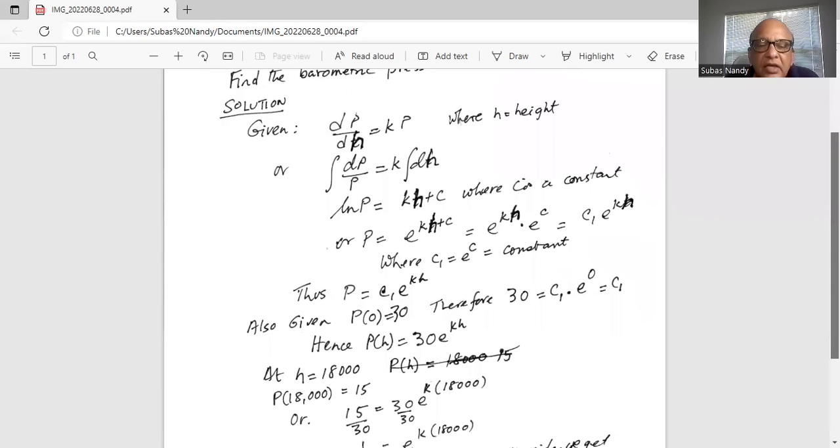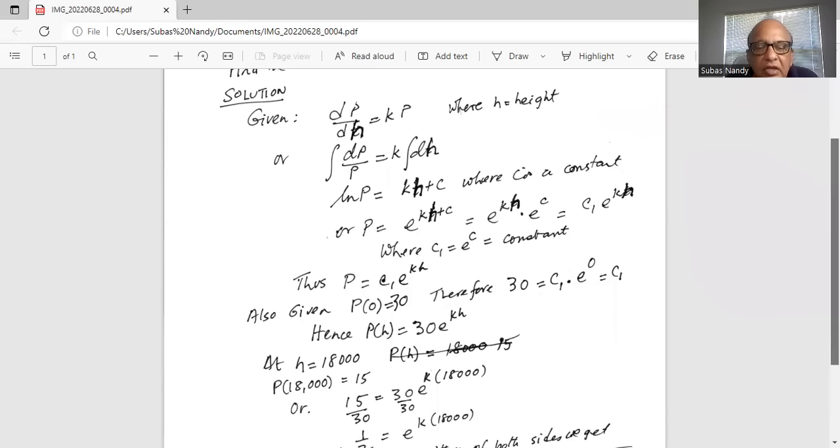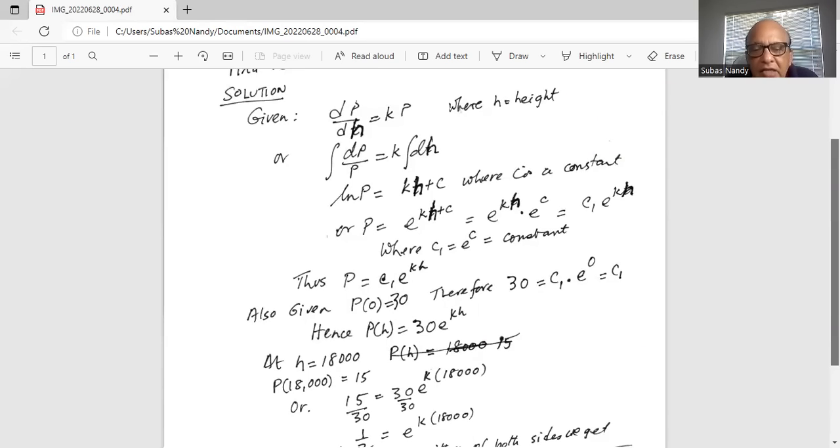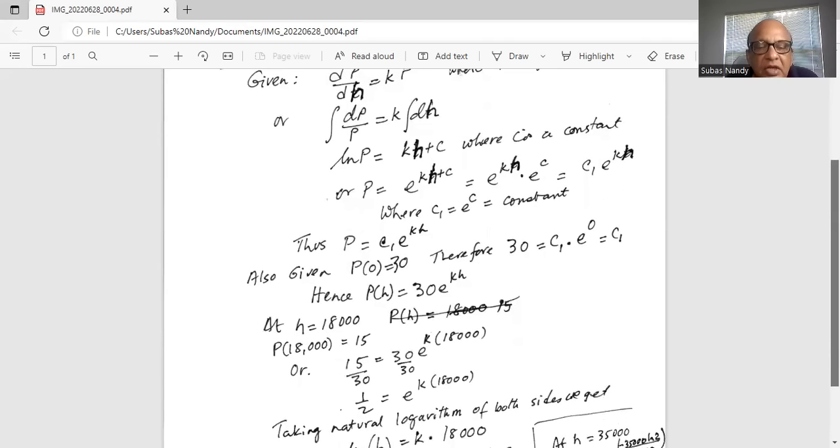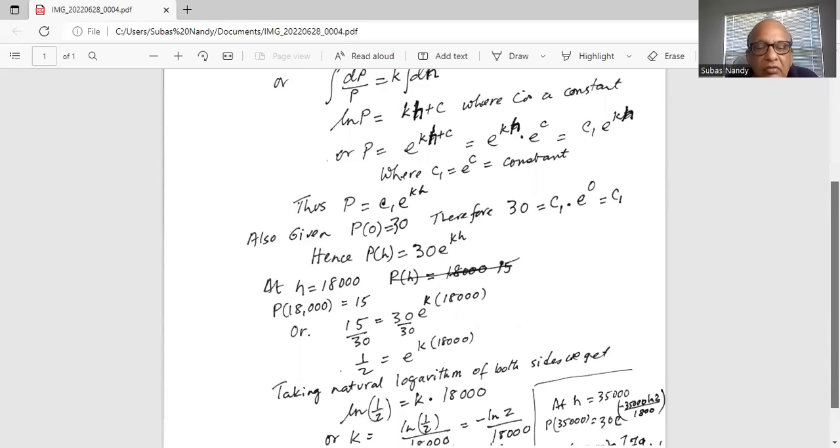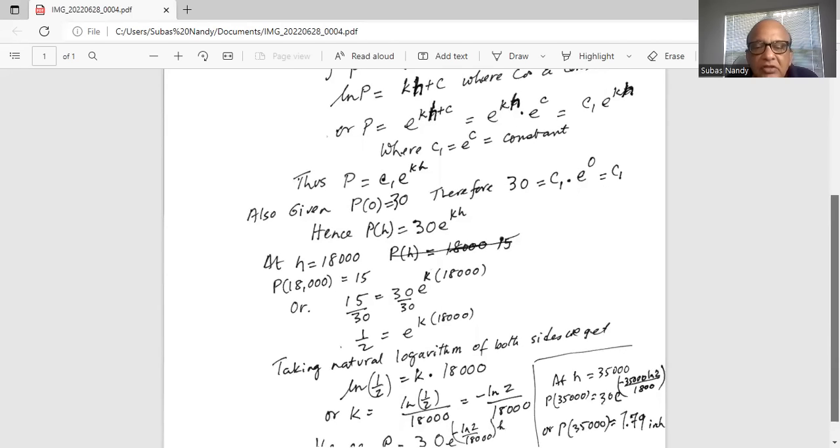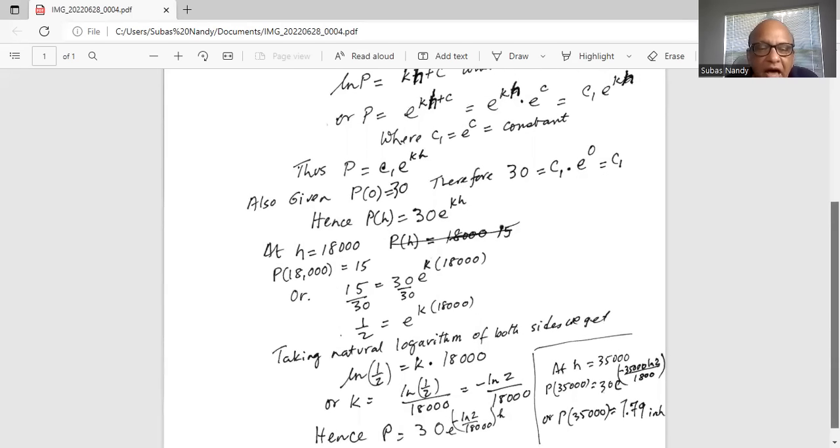Also given to us at height equal to 18,000, p of 18,000 is 15. So 15 is equal to 30 times e to the k times 18,000. Now we divide by 30 on both sides, we get 15 over 30 is equal to e to the k times 18,000. So we take the natural logarithm of both sides to get ln of half is equal to k times 18,000.